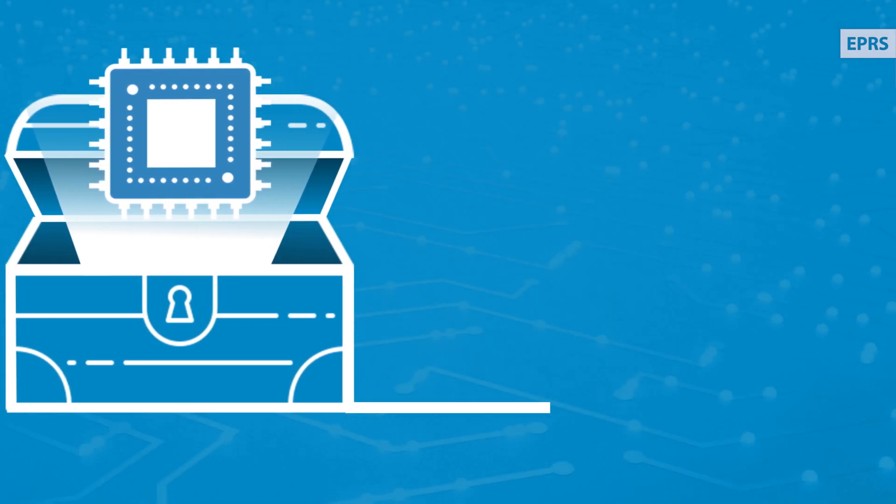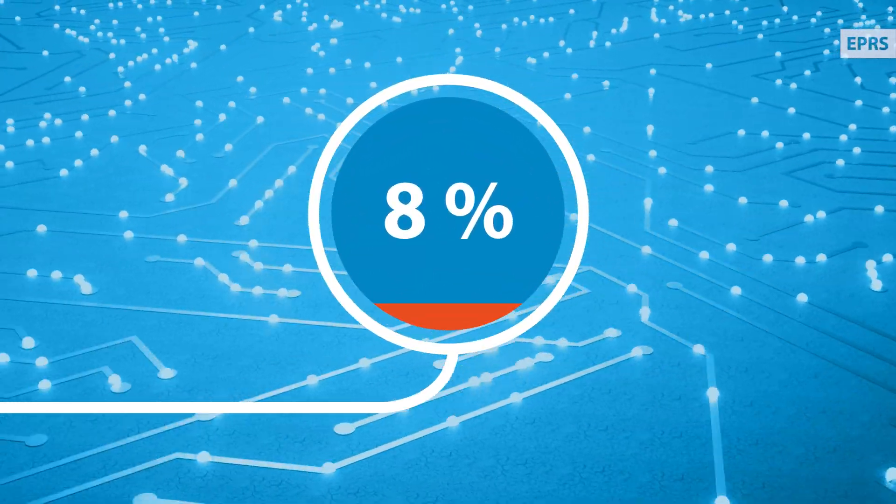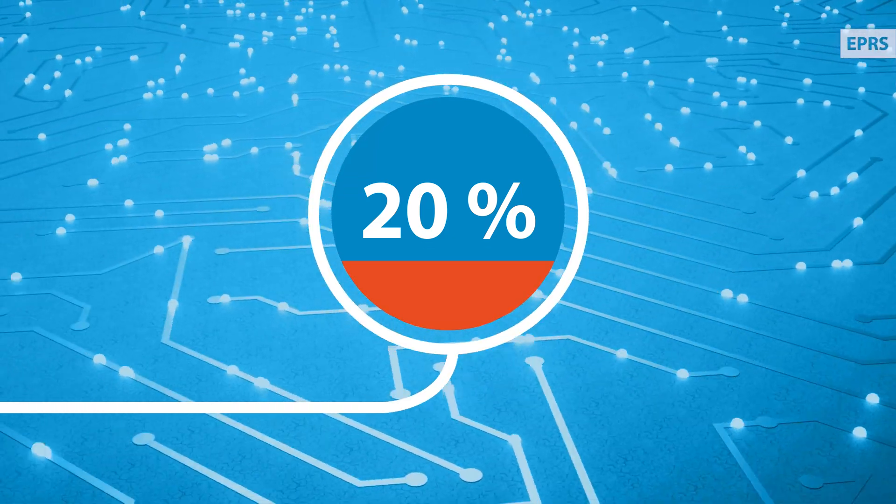It also underlines the urgent need for EU chip autonomy, as Europe only produces 8% of the world's chips when 20% should be the goal. But how can the EU double its global market share by 2030?